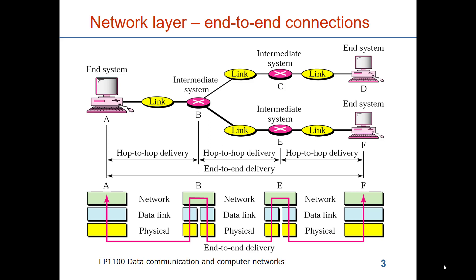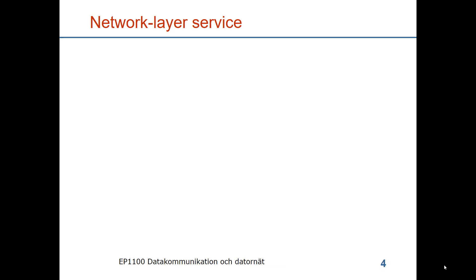Because the world cannot agree on standards for how to build networks on a lower layer. There has to be also innovation where new technologies — faster optical links, new radio technologies — should be able to be connected together with existing systems. And this is the function of the network layer.